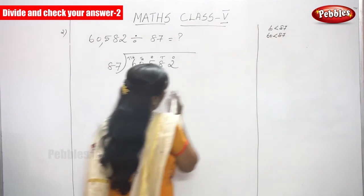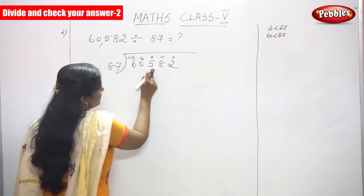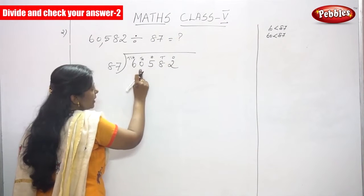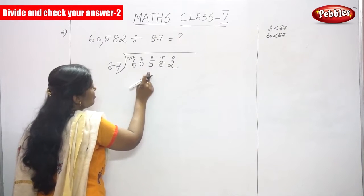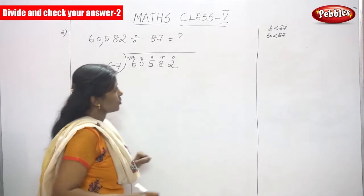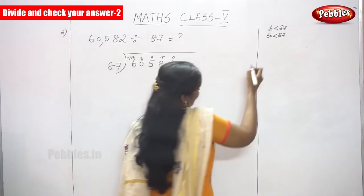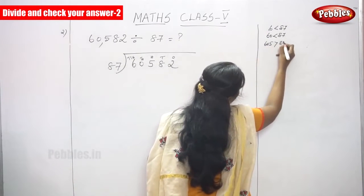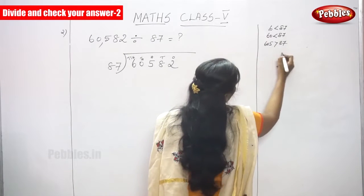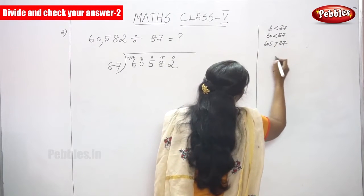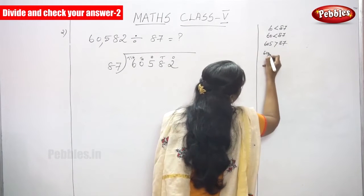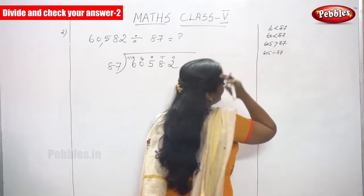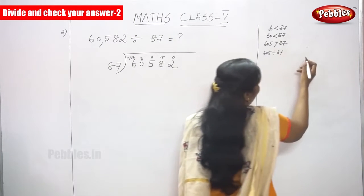So you can't divide. Go to the next digit, that is the 100s digit. 605 is greater than 87. So 605 is now divided by 87. Tell the tables of 87.